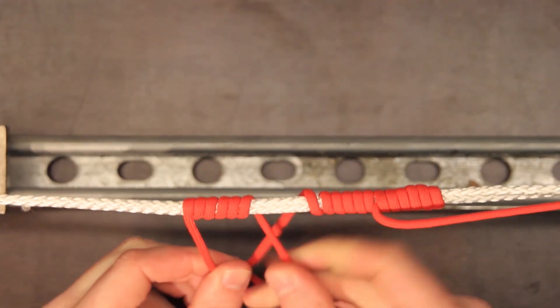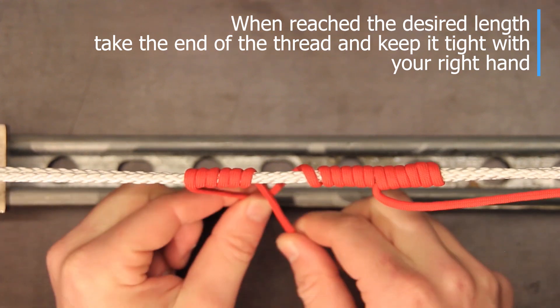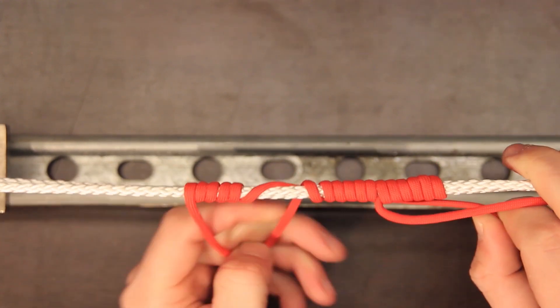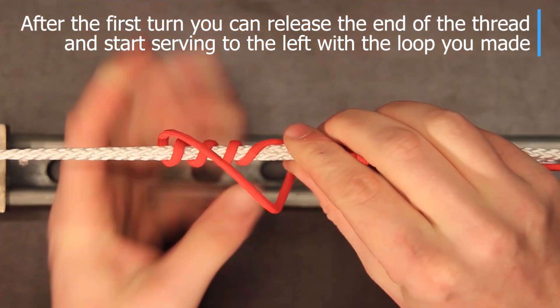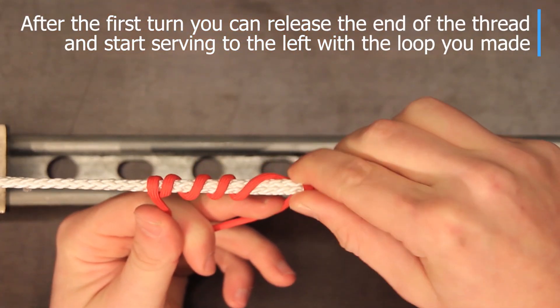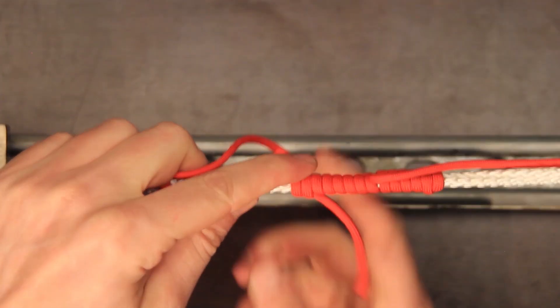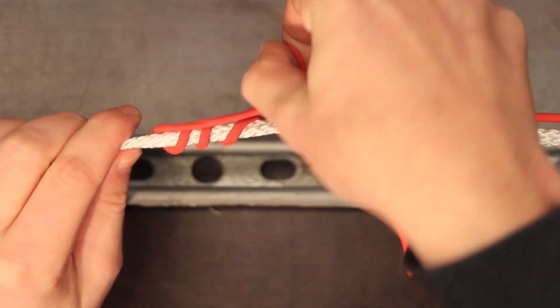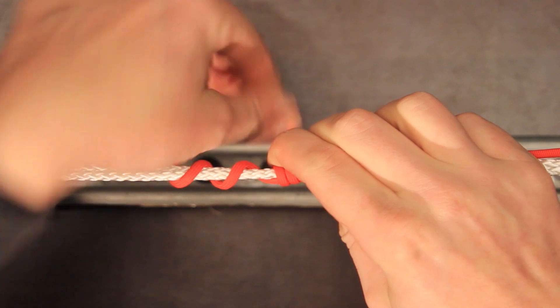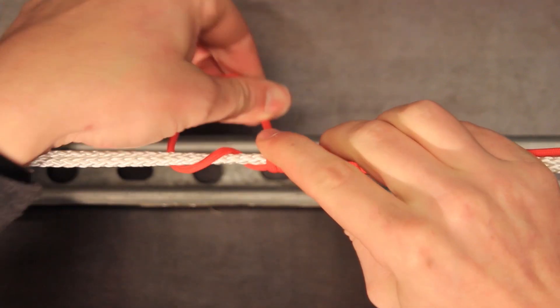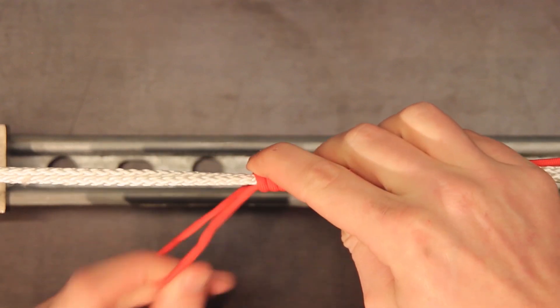Now when we have done again I did six here but when we have done like 20 we're gonna put the end to the right and start serving backwards. As you can see when I wind it up on one side it winds off on the other and when we have done the number of turns all you have in the end is a little loop.